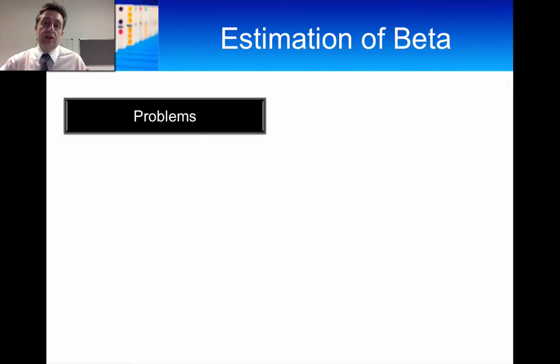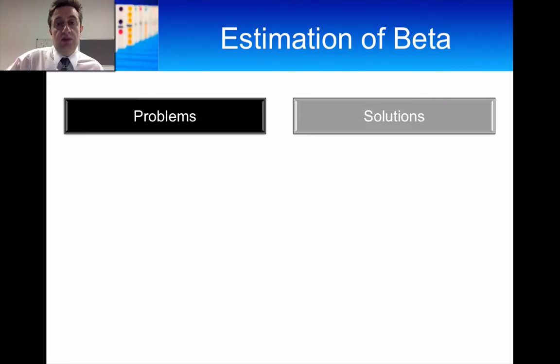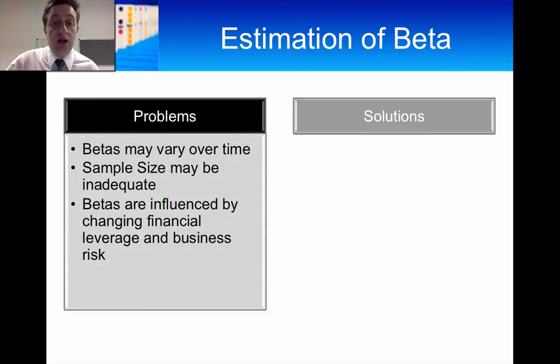So let's focus then on some of the issues before we actually talk about using the real data. There are a number of issues with using data to estimate beta. And in actual fact, if you were to look at lots of different websites, financial websites like FT.com or Reuters or Yahoo Finance, for any one particular company, you may actually find different estimates of beta. And that's just because you're using real data and you're using samples of data. And the samples can lead to different estimates. And that is one of the issues that we face.